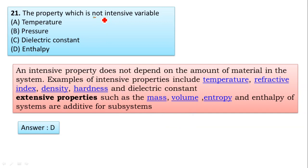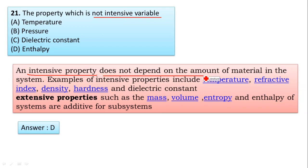Which is not an intensive property? Four options are given: temperature, pressure, dielectric constant, and enthalpy. First, you have to know what an intensive property is. The intensive property is a property which does not depend on the concentration or amount of the material in the system. Examples of intensive properties include temperature, refractive index, density, hardness, and dielectric constant.